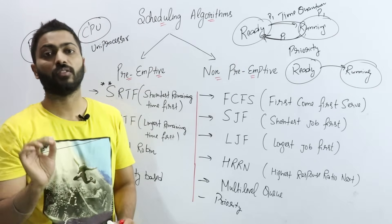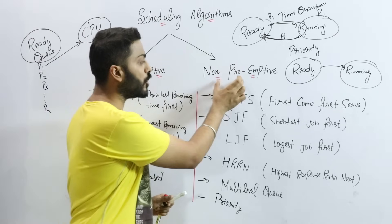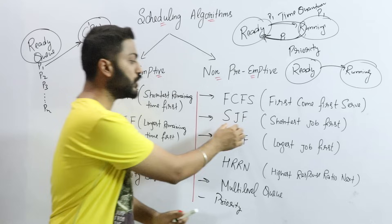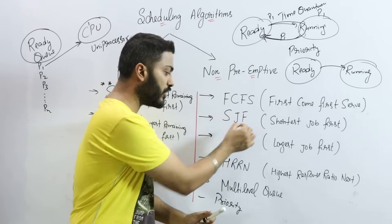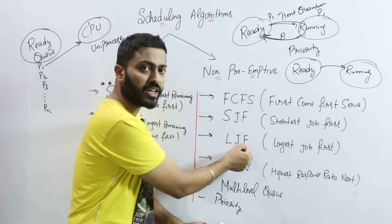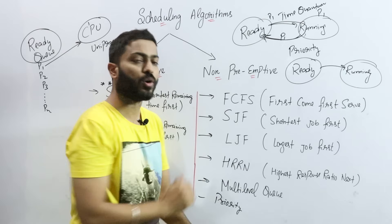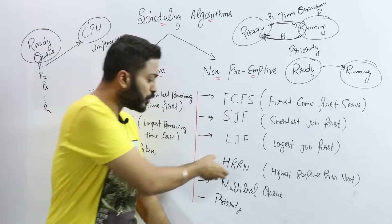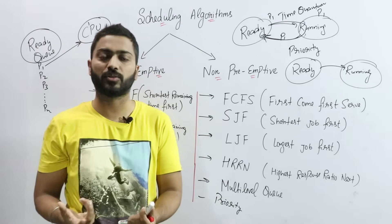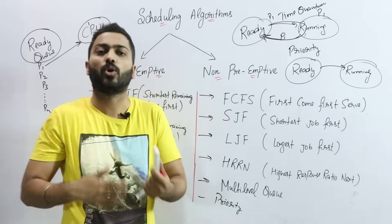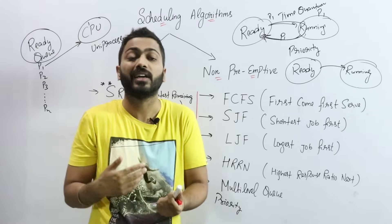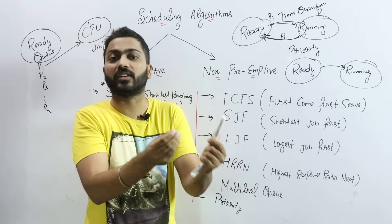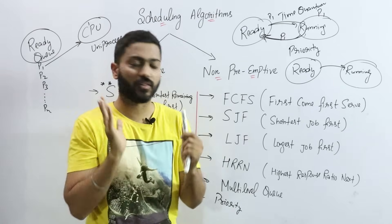In non-preemptive scheduling, the algorithms are: First Come First Serve, Shortest Job First, Longest Job First, and Highest Response Ratio Next (HRRN). In HRRN, we calculate a response ratio using a formula and use it to decide which process to execute next.